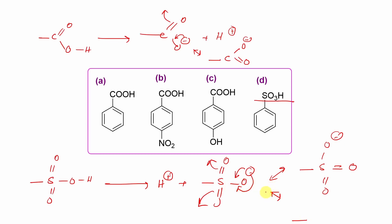These are called equivalent canonical forms. I can say in case of carboxylic acid, two equivalent canonical forms are there. Whereas in case of sulfonic acid, three equivalent canonical forms.